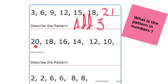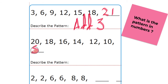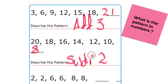Next exercise: 20, 18, 16, 14, 12, 10. From 20 it drops to 18, 18 drops to 16, 16 drops to 14, 14 drops to 12, 12 drops to 10. So the next number will be 8 — that means the rule is subtract 2, or minus 2.